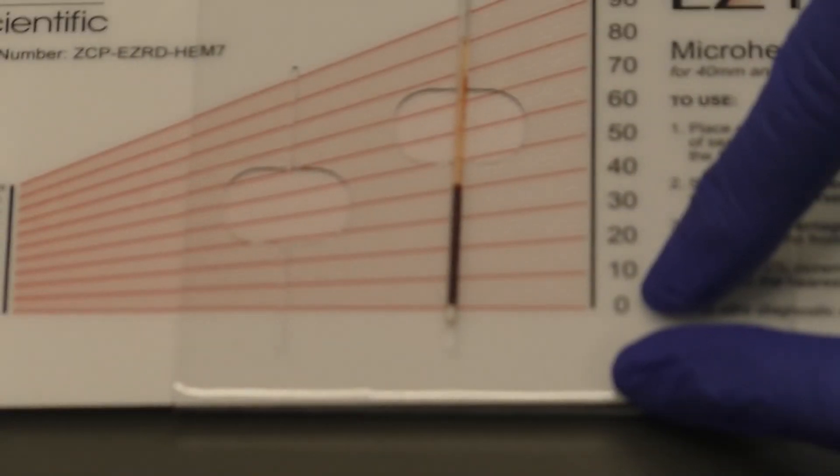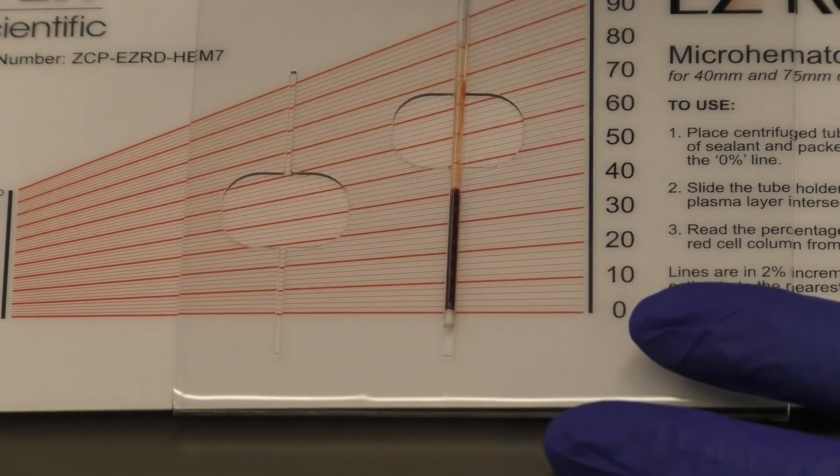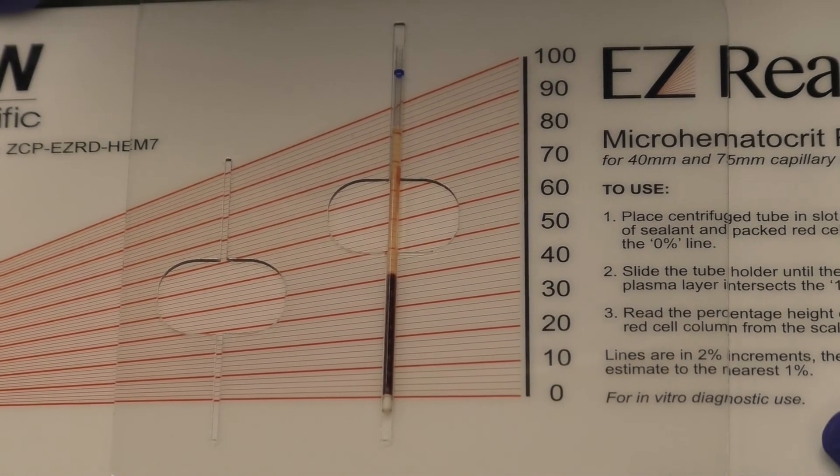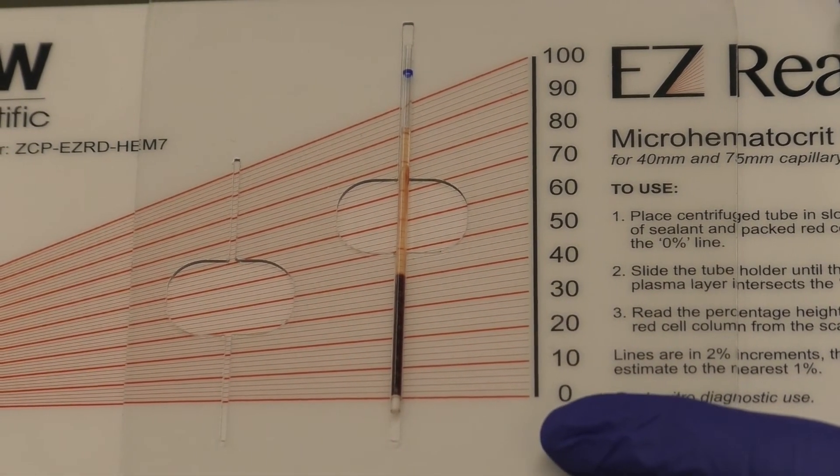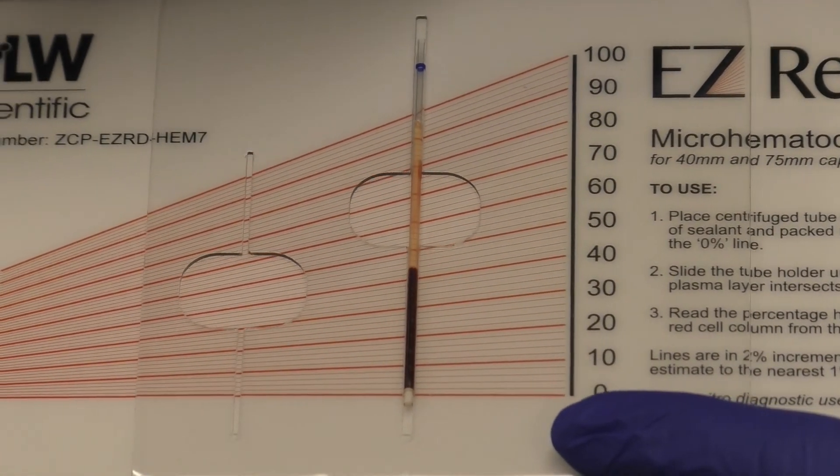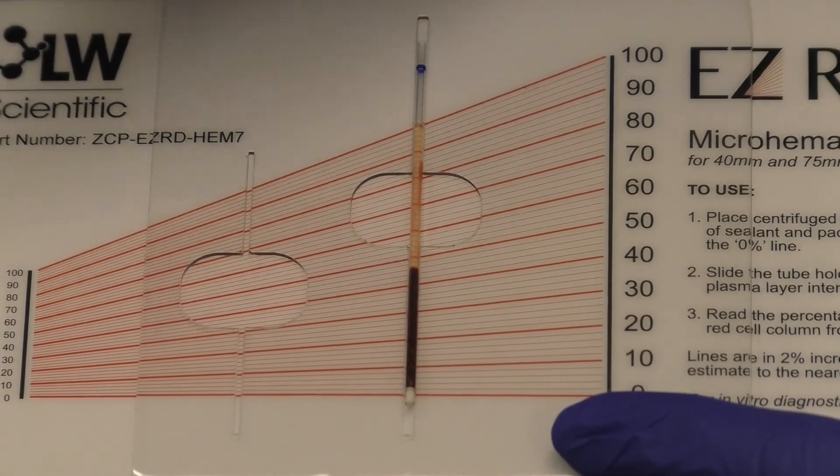Adjust the tube until the zero percent line is aligned with the bottom of the packed cells in the tube. Ensure the reading card is flush with the bottom of the sliding holder. Slide the tube holder until the top of the plasma layer intersects with the 100 percent line.